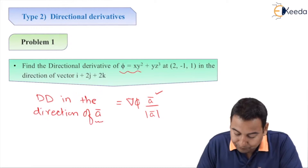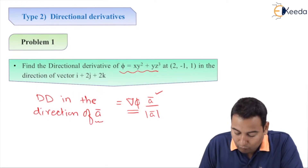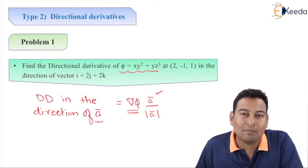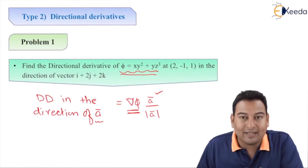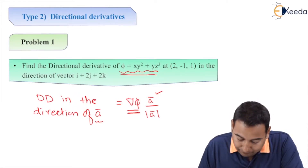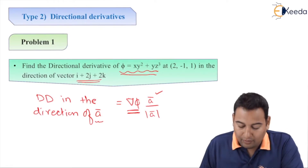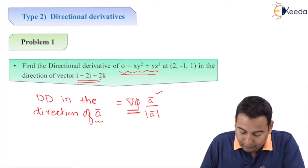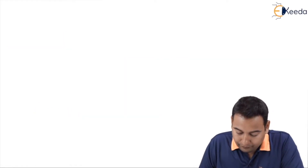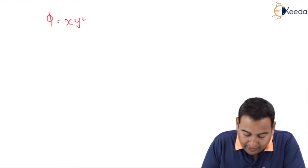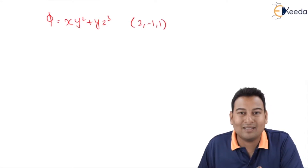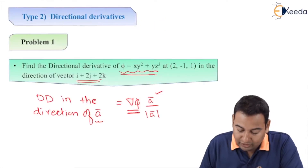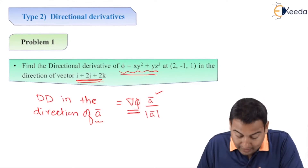Here, phi is provided. Del-phi is the gradient, which is normal to the surface. First we need to find del-phi, and then apply it in the direction of the vector. phi equals x·y² + y·z³, and the point given is (2, −1, 1). The direction vector is also provided: i + 2j + 2k.